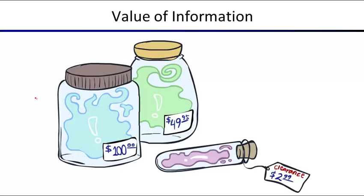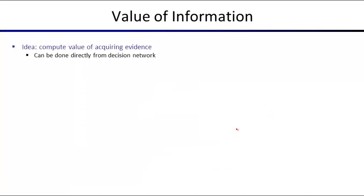Now let's look at the value we can attribute to the sensing actions. You can imagine there's a magic potion that is information — some information is worth a lot, some is worth less, and some is really not worth a whole lot. The idea is that we're going to compute the value of acquiring evidence, and we can do this directly from looking at the decision network.